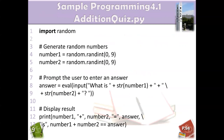Now for practice sample 4.1: we will generate two numbers — number one from zero to nine and number two from zero to nine. Of course we have to write `import random` first, because all modules we use have to be imported before we can use their functions.